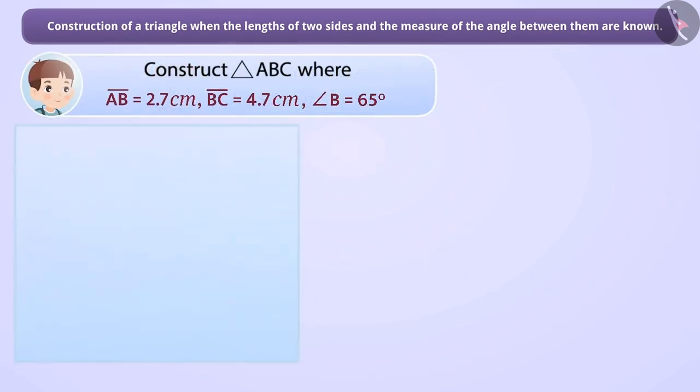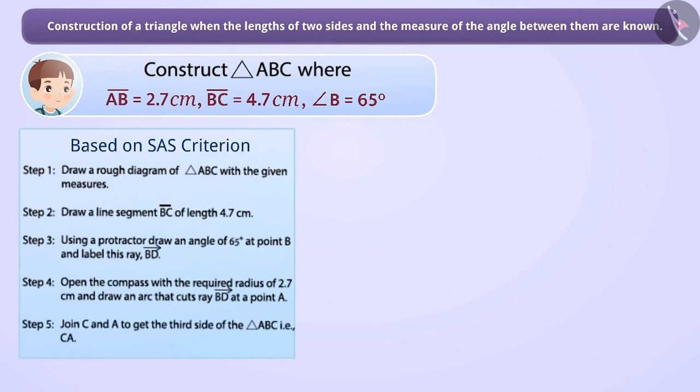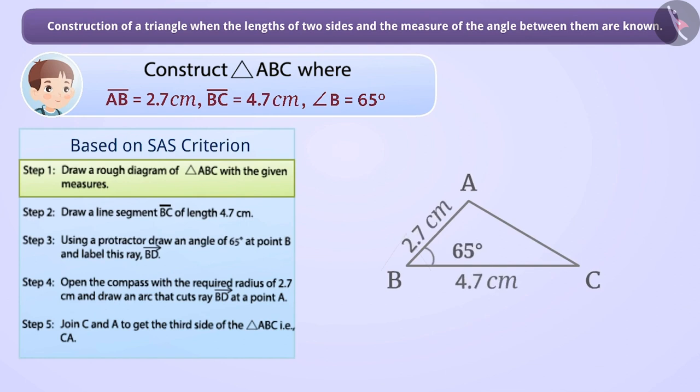Let's construct triangle ABC based on SAS criterion. Step 1. First, we draw a rough diagram with the given measures. This helps us to determine the procedure in construction. In this way, we will be able to construct the triangle easily.